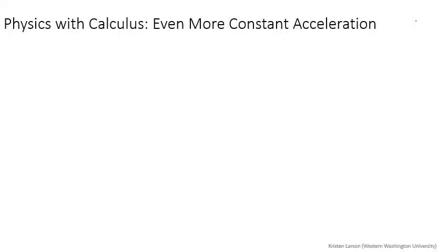What we have so far are two kinematic equations for constant acceleration. We have that velocity is the initial velocity plus acceleration times time, and position is the initial position plus the initial velocity times time plus one-half the acceleration times time squared.